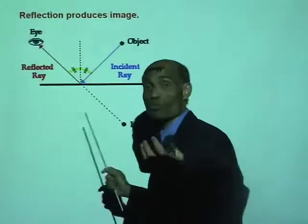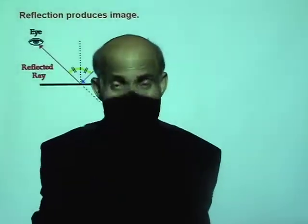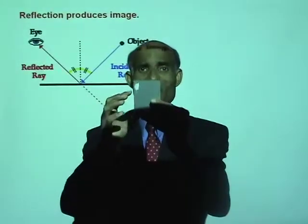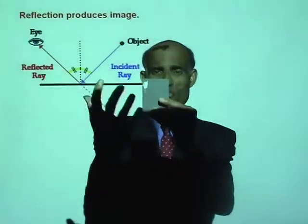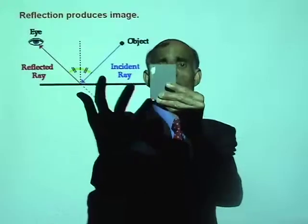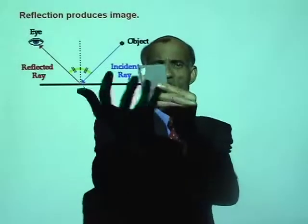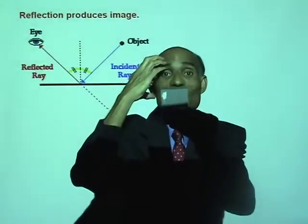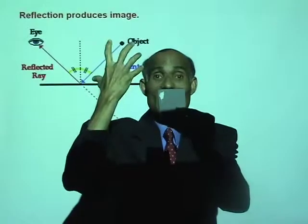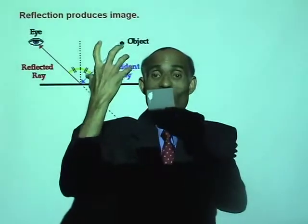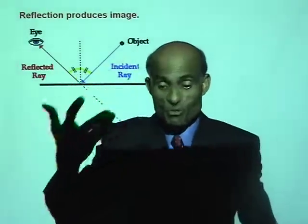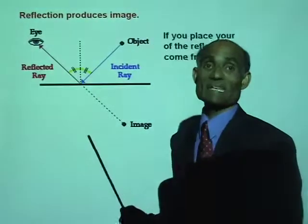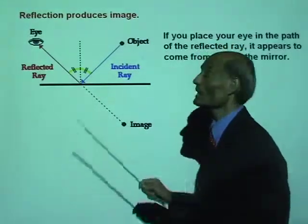Is this really there? If I look into the mirror, I can see my image. But when I go back and try to catch it, it's not there. It's an illusion created in my brain — by the rectilinear propagation of light.